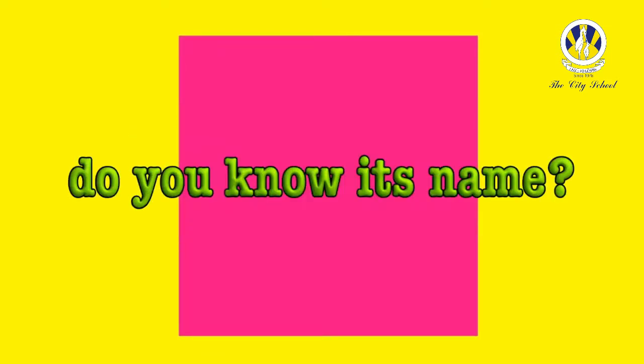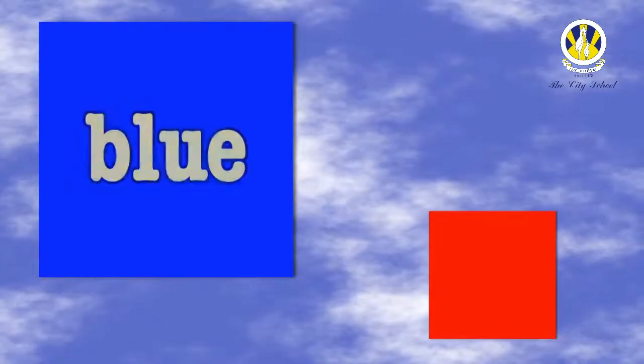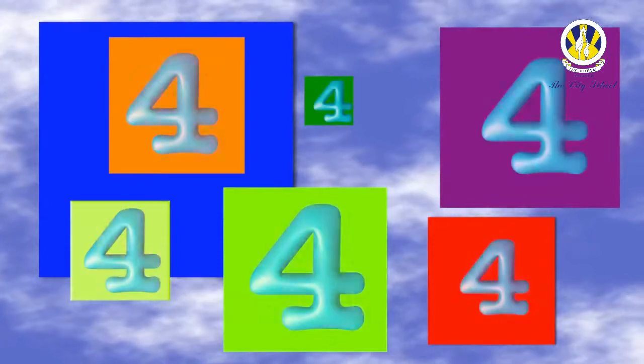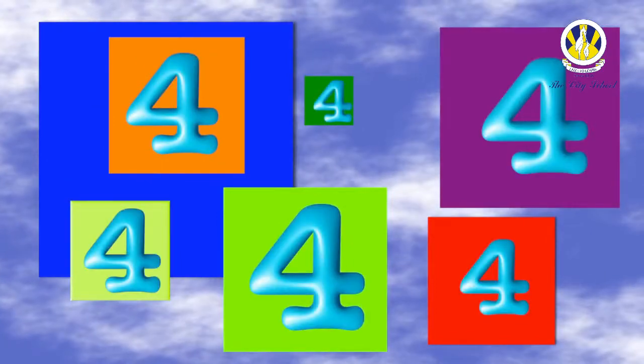Some are big, some are small, blue and red — that's not all! Any color, any size, every square has four sides. Some are big, some are small, blue and red — that's not all! Any color, any size, every square has four sides. One, two, three, four — four sides, four sides!